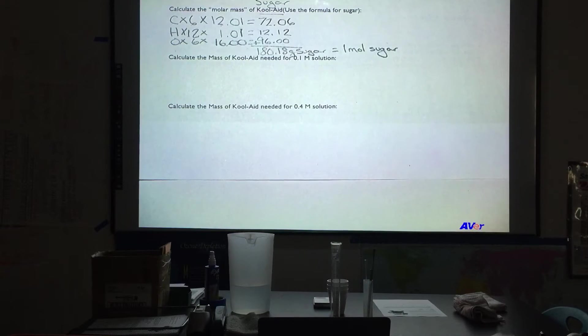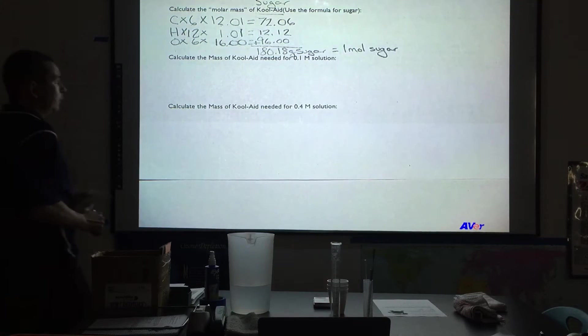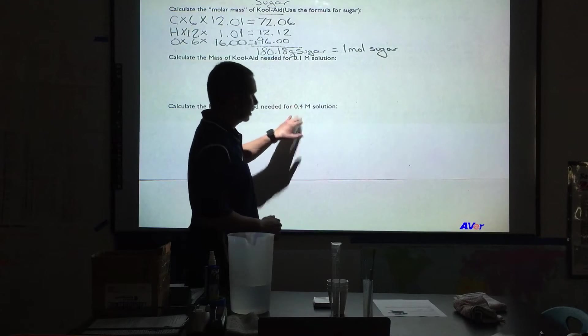Now at this point we are going to calculate the mass of Kool-Aid needed for a 0.1 molar solution when we are making 0.1 liters of this solution. We are also going to make a 0.4 molar solution of Kool-Aid which will have a higher concentration.